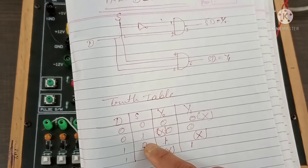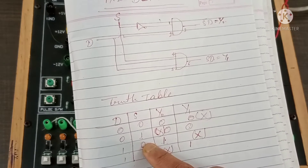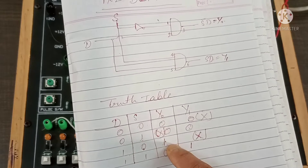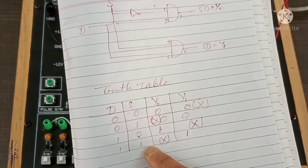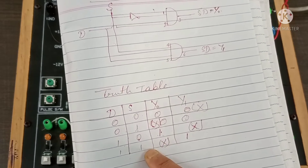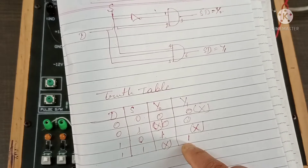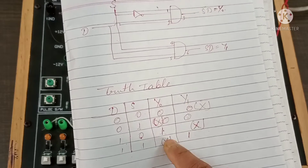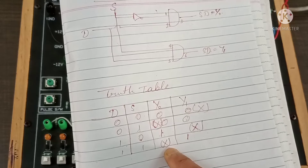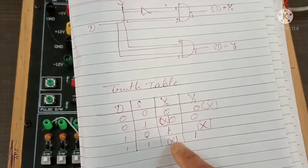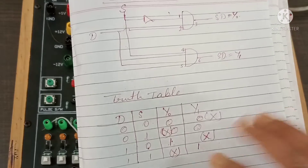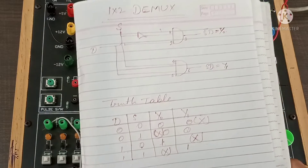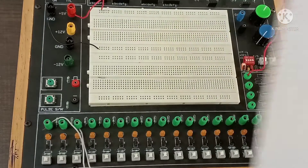So when S is zero, data goes to Y0 — if data is 1, then 1 will come to Y0. When S is one, data goes to Y1. In that case Y0 we don't consider. That is the working principle of the demultiplexer.